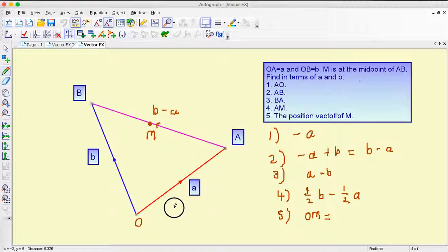Now over here let's put in O to M. Now to get from O to M I'm actually going to go along O to A and then A to M. Now why did I break it up like that? Because I know this vector is a and A to M I've already got.